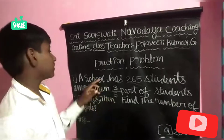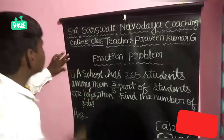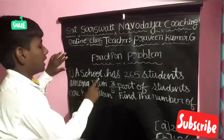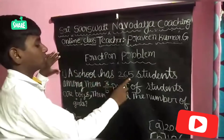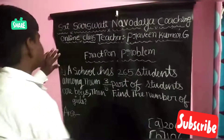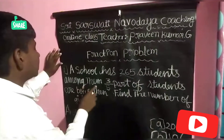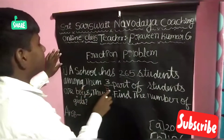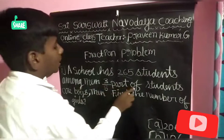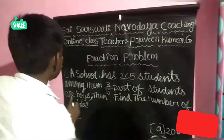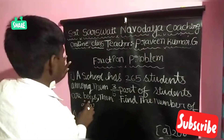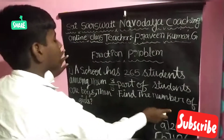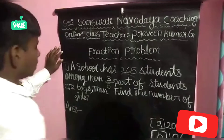So I am doing the problem of fractions. A school has 265 students; among them, 3/5 part of students are boys. Then find the number of girls.